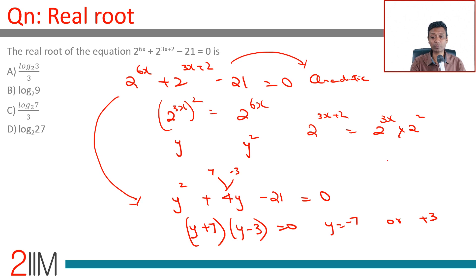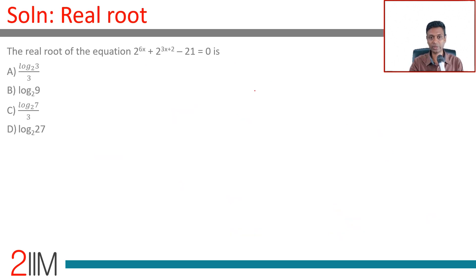2^(3x) cannot be negative. y is 2^(3x), remember, so this is quite simply 2^(3x) = 3.